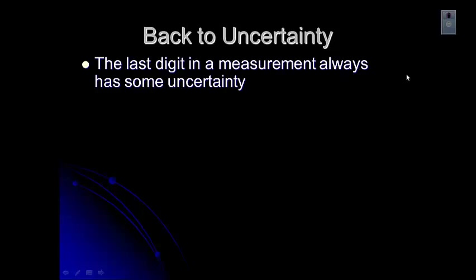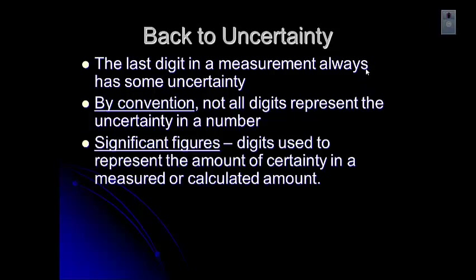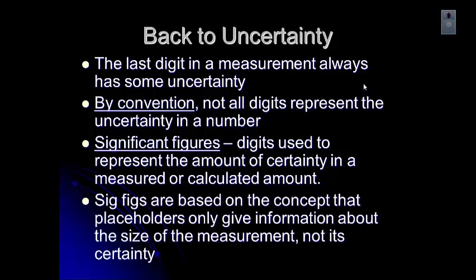In this video, we're going to talk about uncertainty and how we deal with it using significant figures. The reason we have uncertainty is because that last digit in a measurement is the one that we estimate, so there's always some uncertainty with it. Many of the digits do represent certainty — just that last one doesn't. Significant figures are used to tell us how much certainty there is in a given number or calculated amount. They are based on the fact that some numbers are used as placeholders, which tell us about the size of a measurement but not how certain it is.